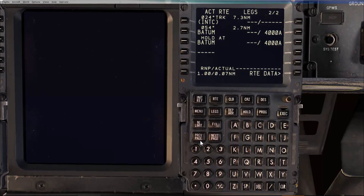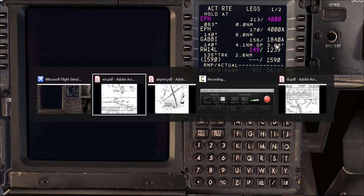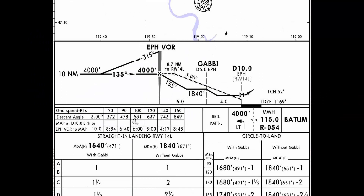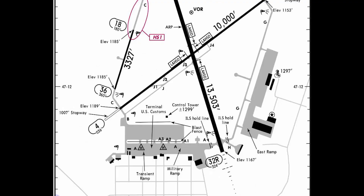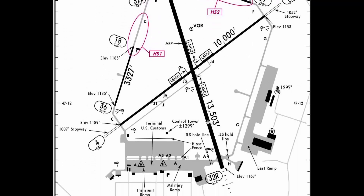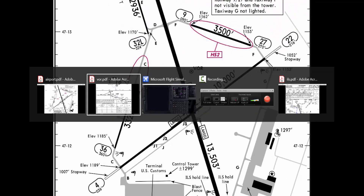4000 for Echo Papa Hotel — checked in the CDU. And Gabby to be 1840 or above. As you can see, I'm going back and forth just to make sure that as I brief, I check. So Gabby: 1840 or above. PAPI on the left side. If you want to mention the visibility and the scenery, just make sure you have something above the required. Then we'll go to the airport diagram — the only thing I mention here is the runway is 13,500 feet long. In the simulator, I don't go more than that.